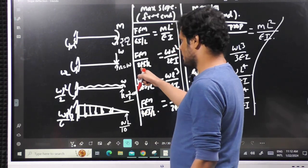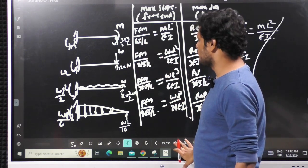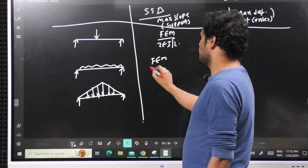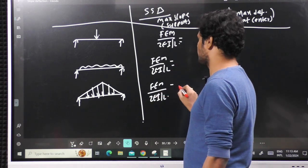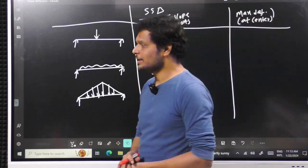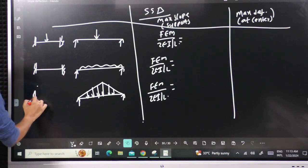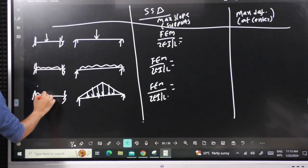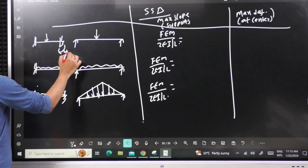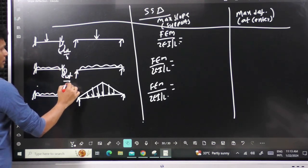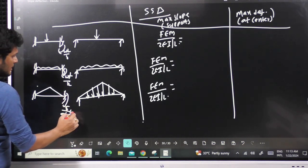This formula comes from the cantilever case — the same fixed end moment / (2EI/L) applies here. But for a simply supported beam there is no fixed end. So we imagine: if the simply supported beam is replaced with fixed ends, what moment is generated? These are standard fixed end moments. For point load: WL/8. For UDL: WL²/12. For UVL: 5WL²/96.